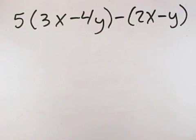In this problem, we have two sets of parentheses, so we'll use the distributive property two times to eliminate those parentheses.